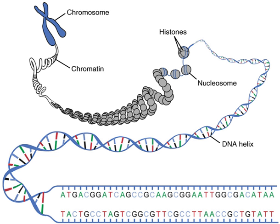== Concatenation and substrings == Concatenation is an important binary operation on sigma*. For any two strings s and t in sigma*, their concatenation is defined as the sequence of symbols in s followed by the sequence of characters in t, and is denoted st.